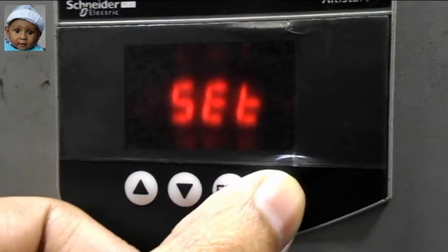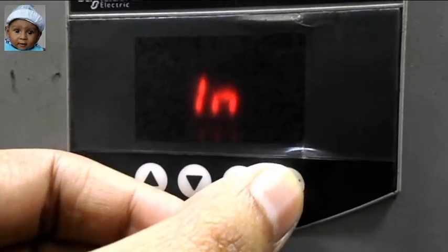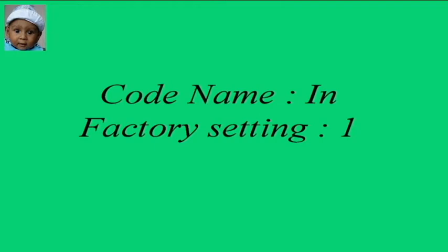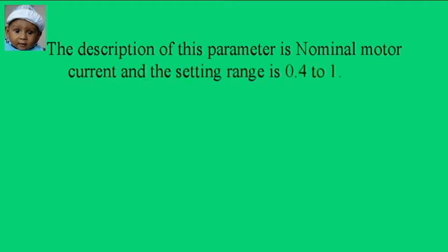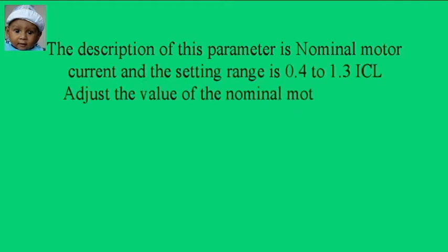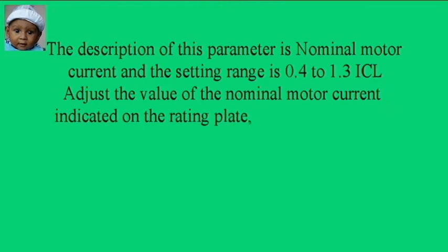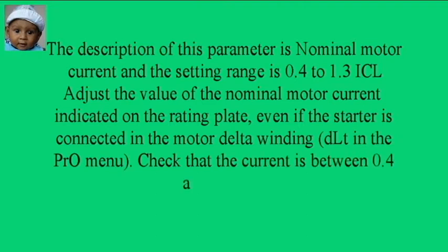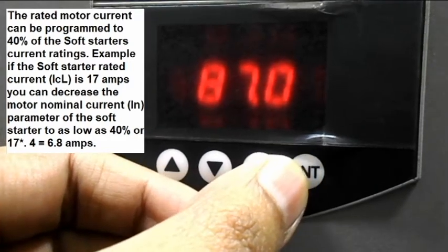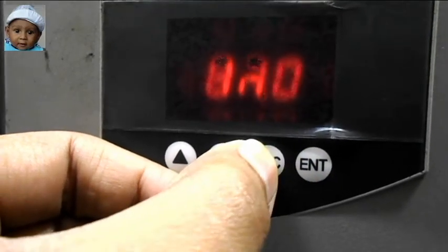When we enter the setting menu, we will find the first code is IN. IN stands for nominal motor current and the setting range is 0.4 to 1.3 ICL. The factory default value of this nominal motor current is 0.4 ICL.